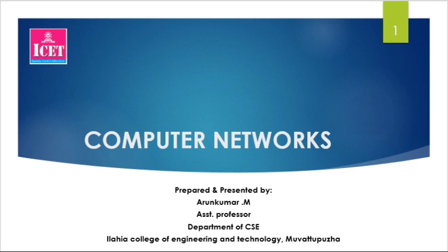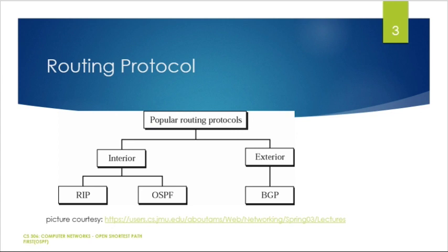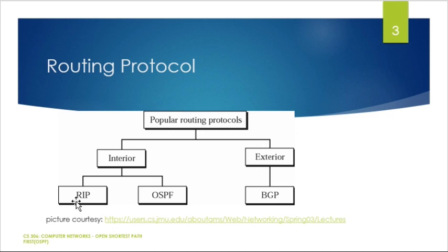Today we are going to discuss intra domain routing protocols, with OSPF as an example. Routing information protocols are categorized into two types: interior routing protocol and exterior routing protocol. Interior routing protocol is termed as intra domain routing protocol, and exterior is termed as inter domain routing protocol. Intra domain is further classified into RIP and OSPF, while exterior is classified into BGP.